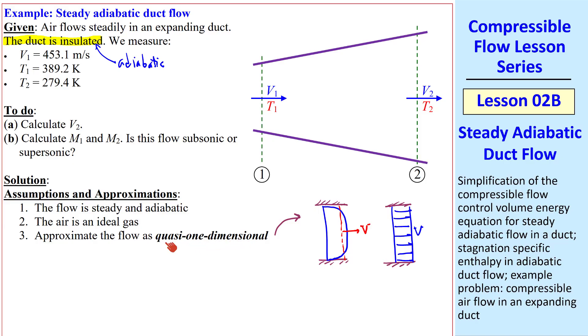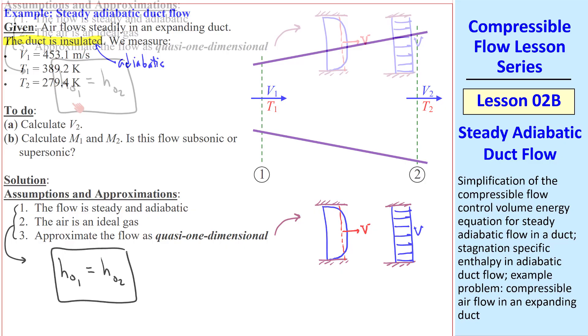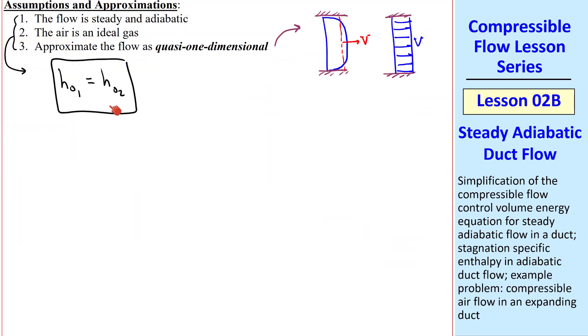To solve this problem, we meet all the requirements of the energy equation we just talked about. So H0-1 must equal H0-2. The stagnation-specific enthalpies must remain constant along the duct. We can expand this out.